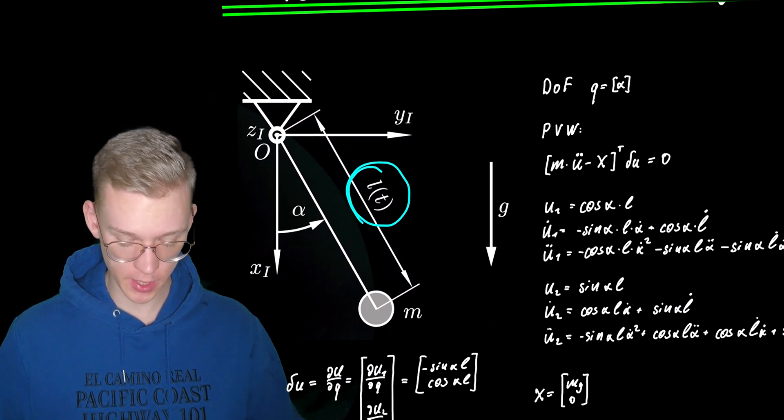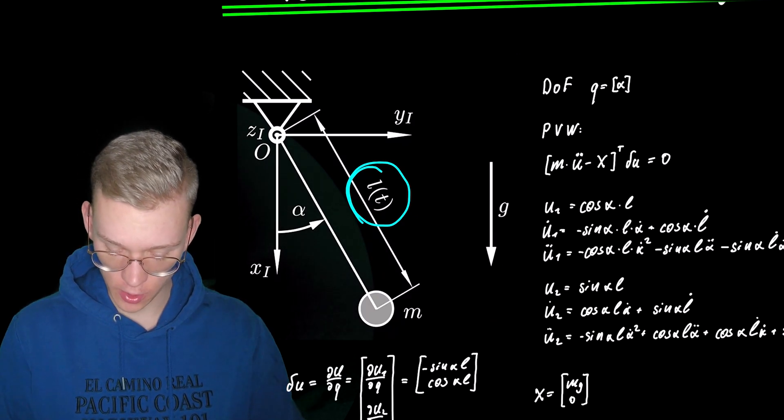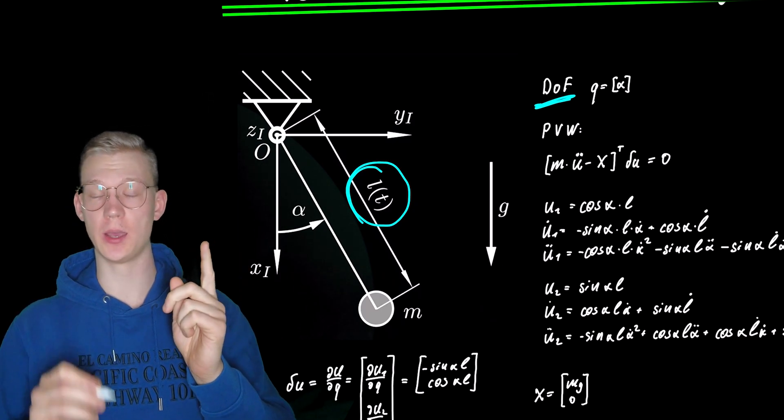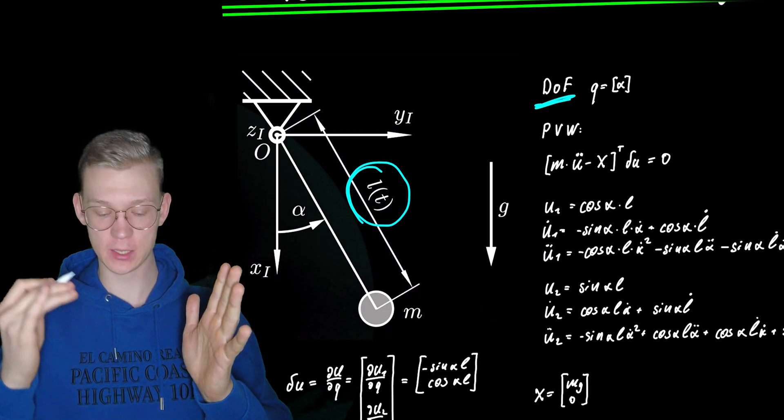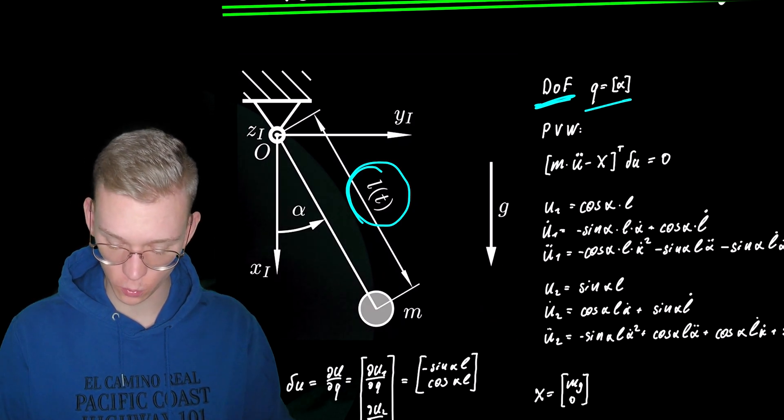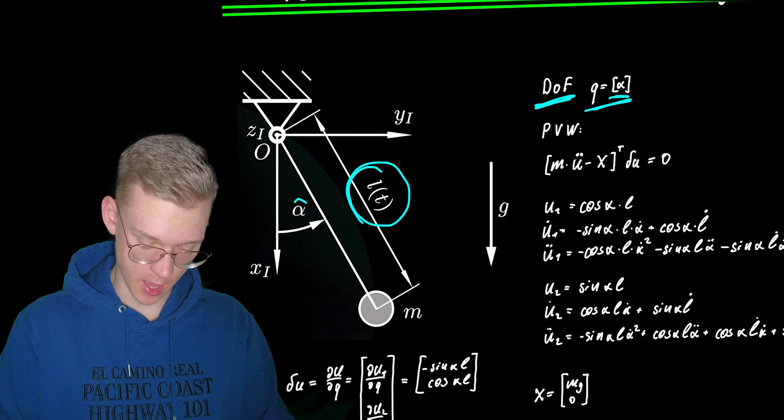So the first thing we do when we want to find the equations of motion, we first of all have to find the degrees of freedom. So we know that it's one mass so two times n, n is one, we have two minus one constraint, we have one left so we have only one degree of freedom. So in our case it's just alpha.